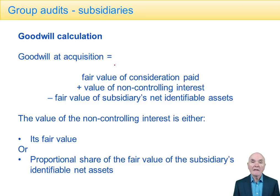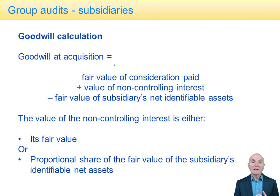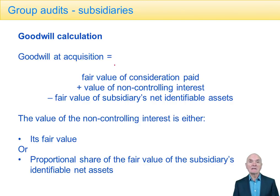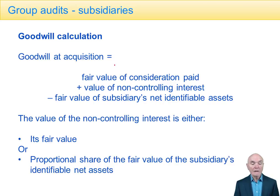One thing that must be verified by the group auditor is goodwill, because goodwill only appears in the group financial statements — not in the holding company or the component companies. It is a figure calculated solely for the group financial statements, so we have to verify the goodwill calculation, particularly in the first year. Subsequently, we always have to review it for impairment. If a subsidiary has gone from profit to losses, it is a fiction to maintain that the goodwill is still a valuable intangible asset. At acquisition, we have to calculate the goodwill — it is the fair value of consideration paid, which might just be cash.